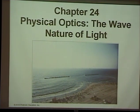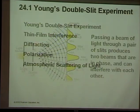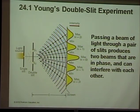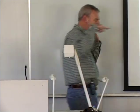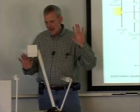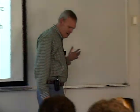Young's double slit experiment — here we go. All the stuff you did in chapter 23, where 1/f = 1/d_o + 1/d_i — that was good old Newtonian-type physics, treating light as a particle. Back in about the 1800s, a hundred years after Newton — kind of during the Enlightenment — Young did this experiment.